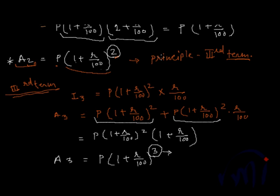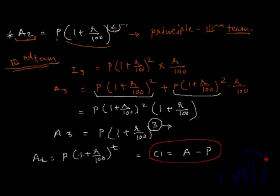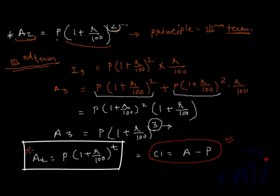Notice the pattern: the amount at the end of the second term is P×(1 + R/100)², and at the end of the third term it is P×(1 + R/100)³. Continuing this pattern, the amount payable at the end of T terms is A = P×(1 + R/100)^T. This is the formula for compound interest. To find the compound interest itself, calculate A using this formula and subtract the principal P.